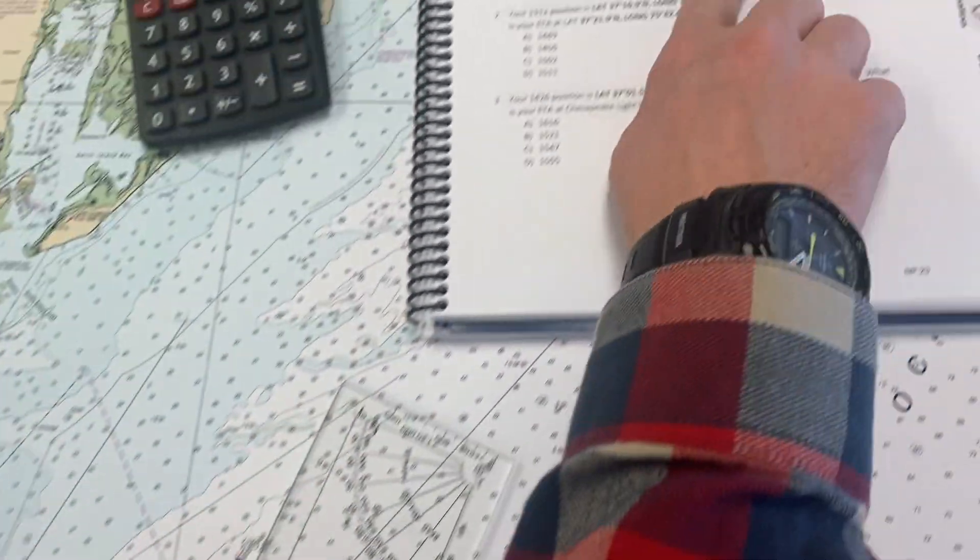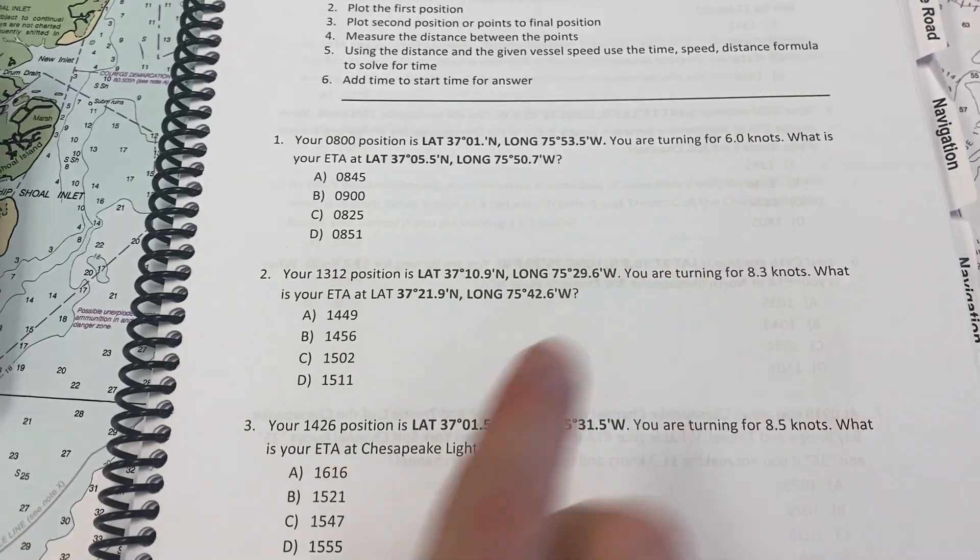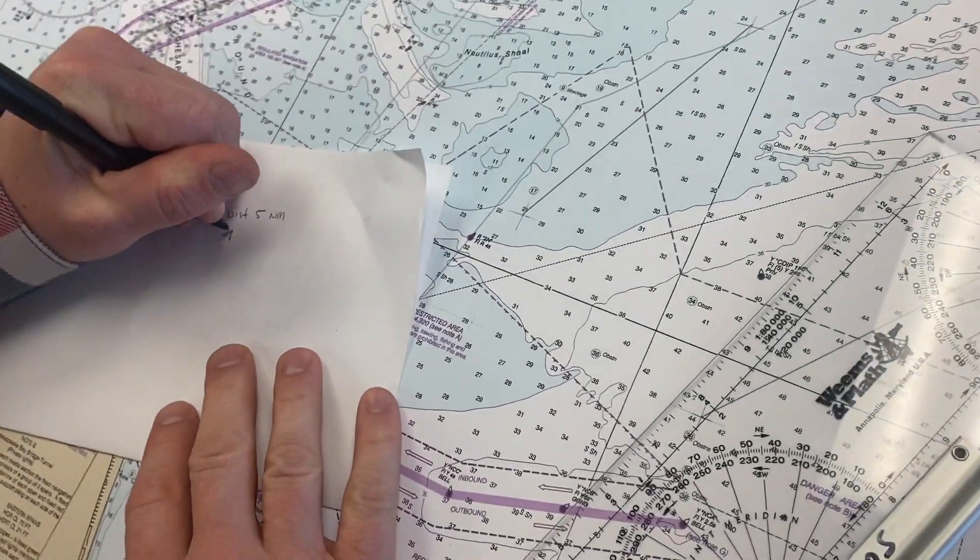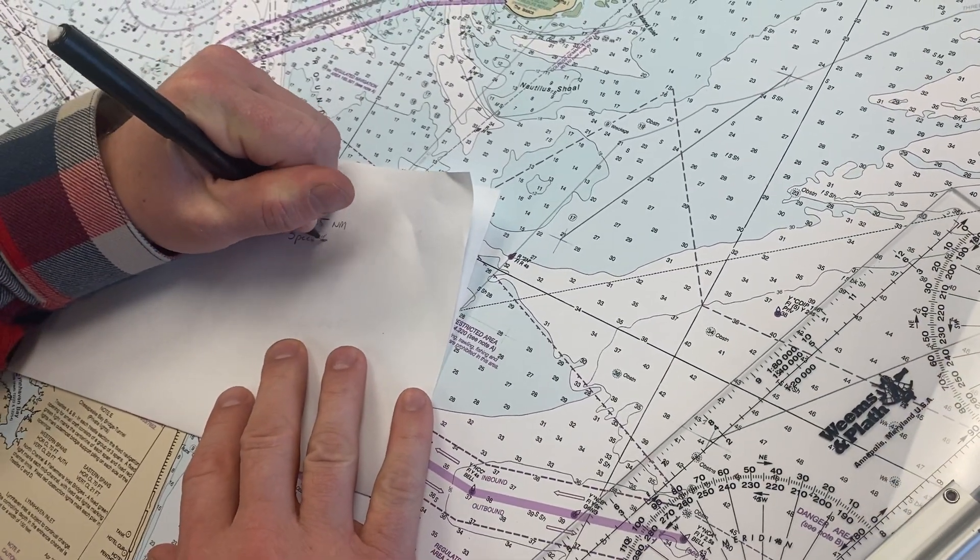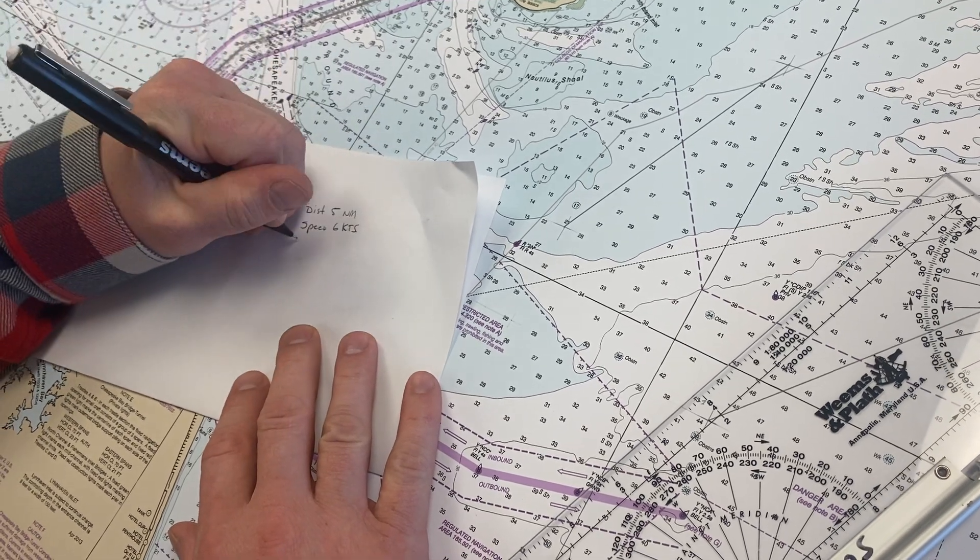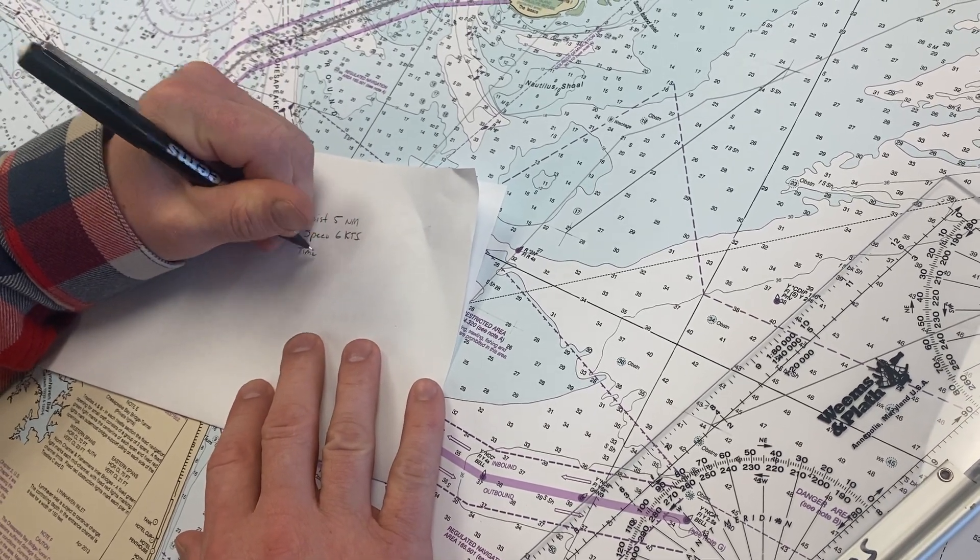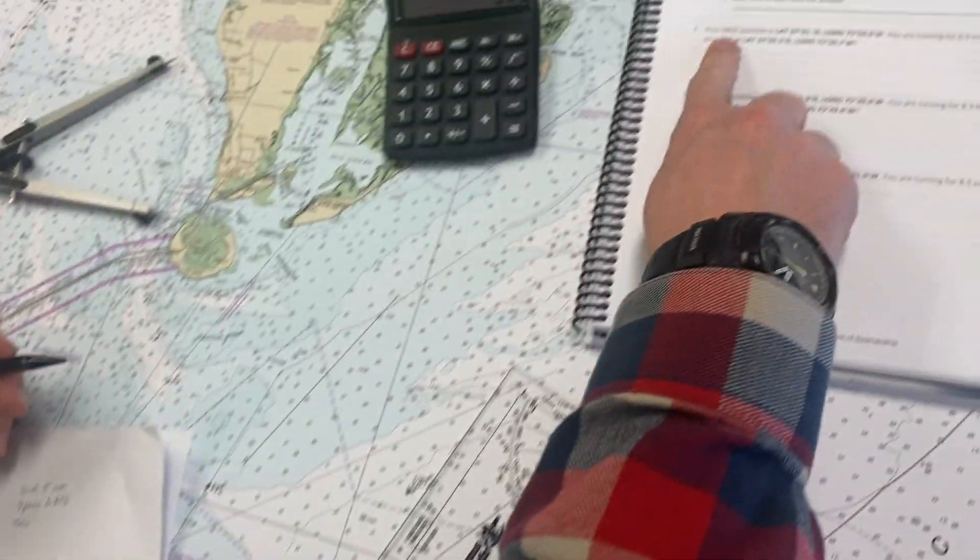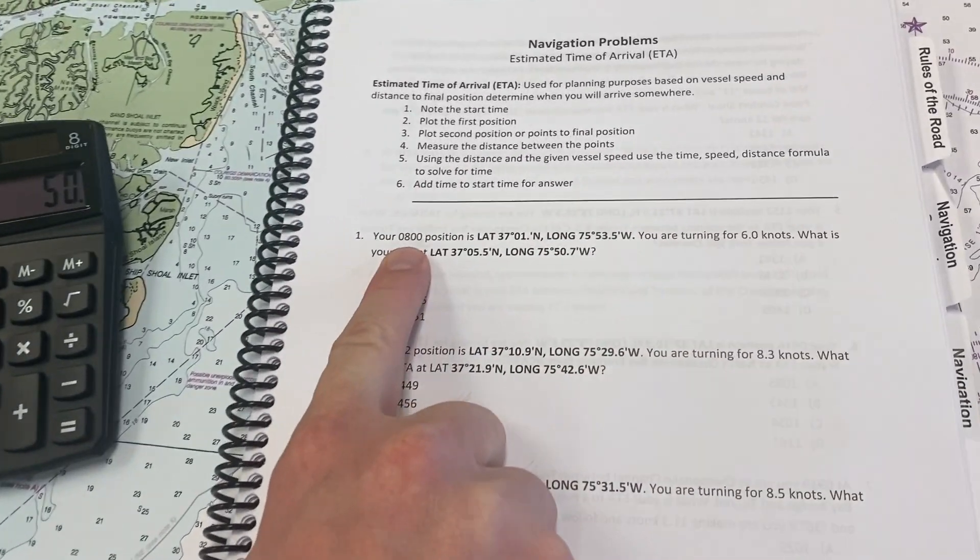I know our speed. It says we're cruising for six knots. So our speed is six knots, and we're looking for our time. We're looking for our time so we can add it to our departure time of 0800.